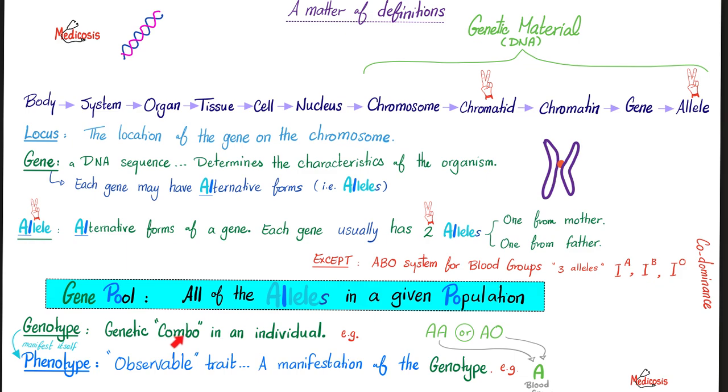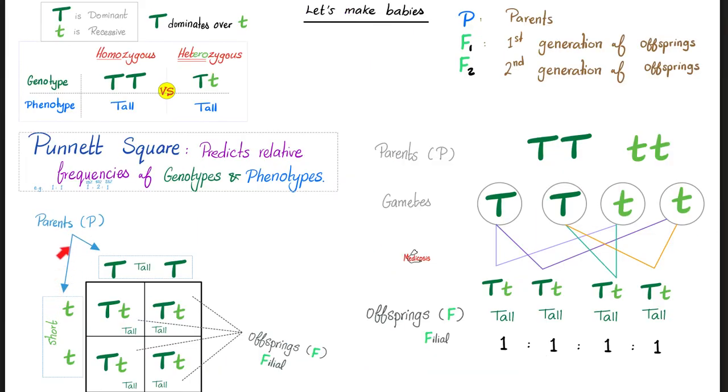Remember, genotype is your genetic characteristics. Phenotype is how you appear as an individual, your observable trait, what we see. The way I remembered is that the phoenix has an observable characteristic shape to the eye. Parents are on the outside, offsprings are on the inside.